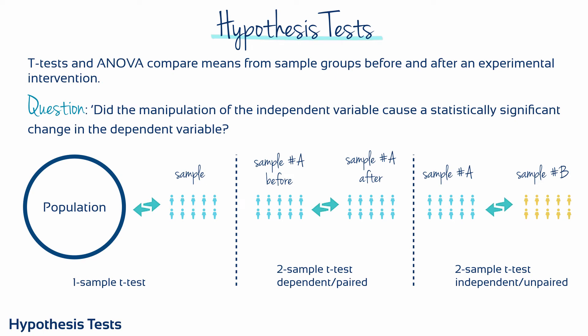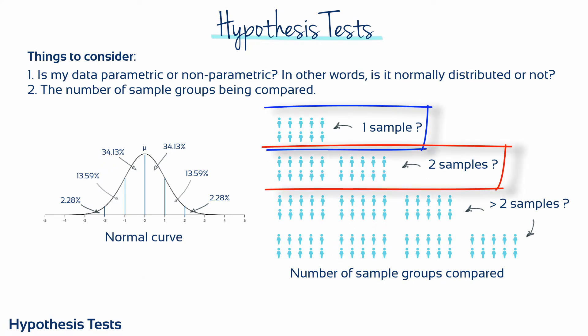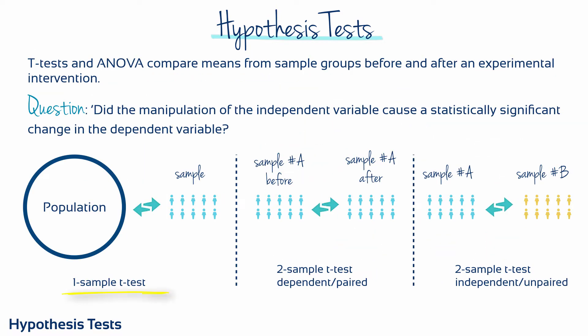For t-tests and ANOVA tests, the maths and equations are focused on comparing means from sample groups before and after an experimental intervention. They are how we answer the question: did the manipulation of the independent variable cause a statistically significant change in the dependent variable? T-tests are appropriate when only two means are being compared — either a sample mean versus a population mean, or one sample mean with a second sample mean. The latter could be a comparison of the same sample group before and after an intervention.